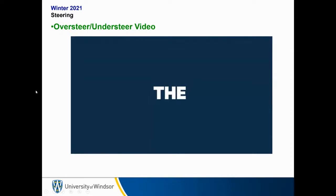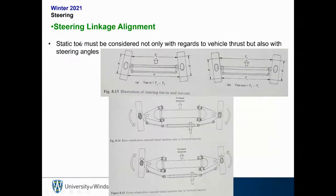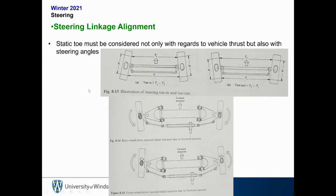Steering linkage alignment: static toe must not only be considered with regards to vehicle thrust, but also steering angles. As you move your steering linkage you will also be affecting toe, so you have to think about how static toe is going to be maintained with changing steering angles — you want to maintain your static toe even as you are turning or steering the vehicle.